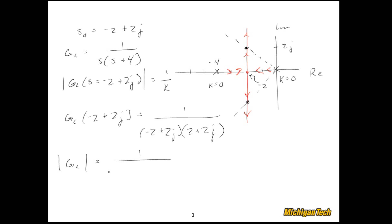Let's see. That's 4 plus 4 squared of 8. So this would be 1 over 8. That's 1 over K. And so K must be equal to 8. So, if I pick K equal 8, I should have my closed loop poles right here at negative 2 plus minus 2j.